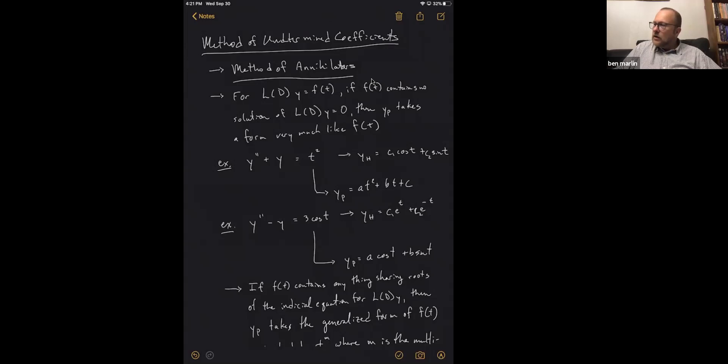Annihilators kind of a neat word. All we mean by annihilator is something that will turn a function into zero. So we're going to start out here with some L of D y—so some differential equation on the left hand side—is equal to f of t. So we're trying to solve a non-homogeneous differential equation. Now, if that was a zero over there, we kind of know what to do. We might not be able to solve all of them, but we know how to do it in a lot of cases.